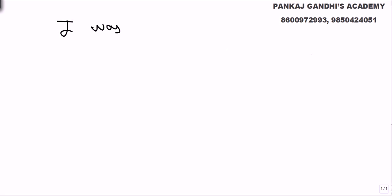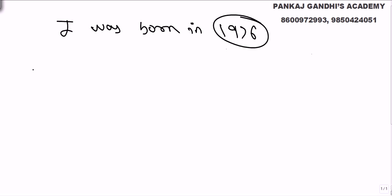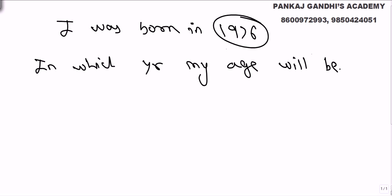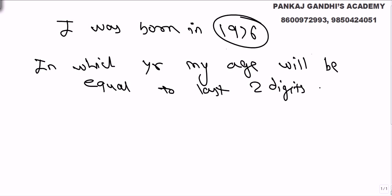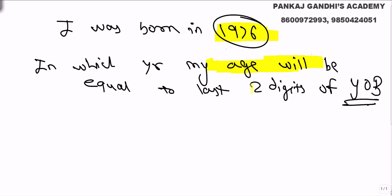Let's say I was born in 1976. In which year will my age be equal to the last two digits of my year of birth? The last two digits of my year of birth 1976 are 76.